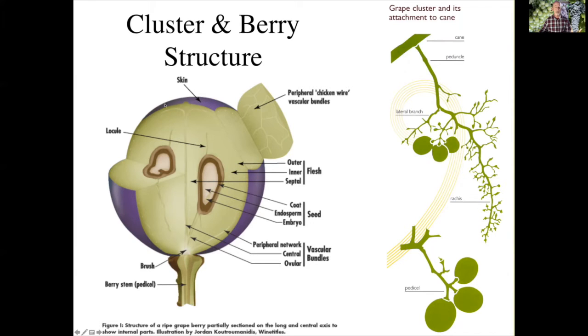The skin has color. This red-purple color comes from a pigment called anthocyanins. Green grapes obviously do not have that—they have chlorophyll there and no anthocyanins are produced.